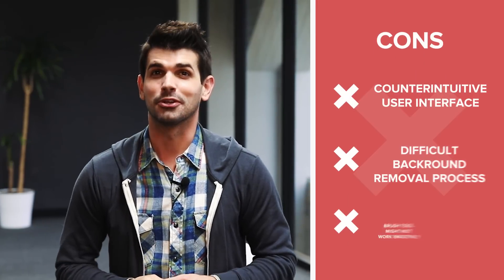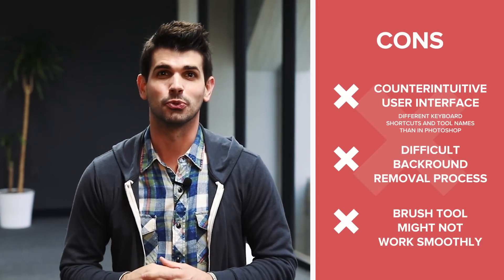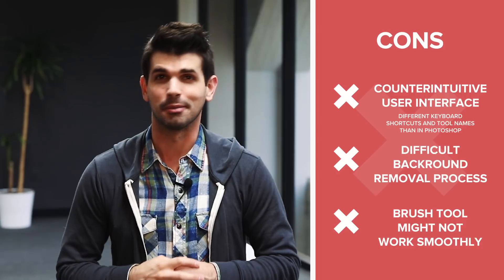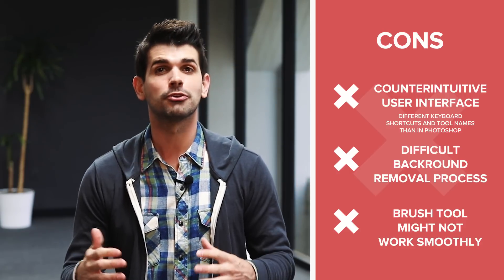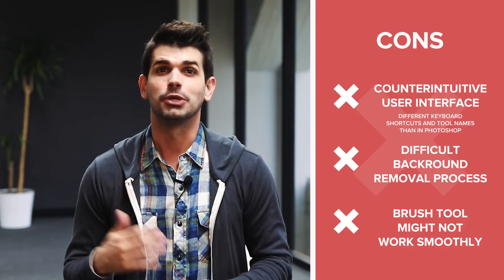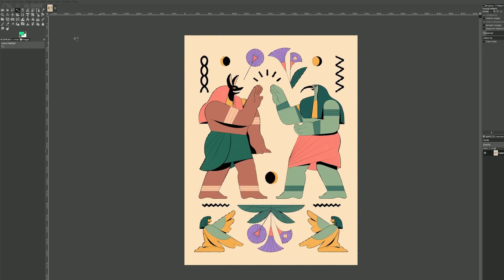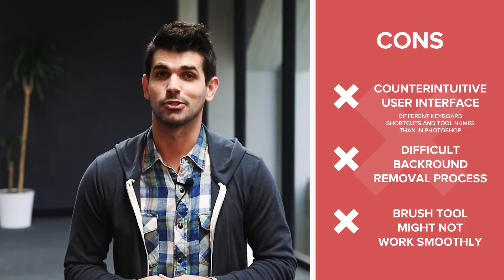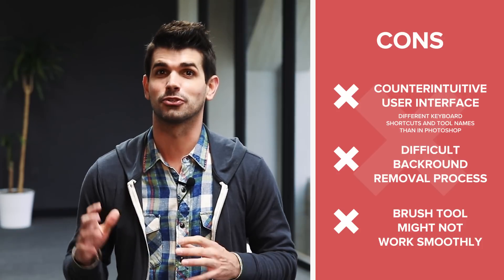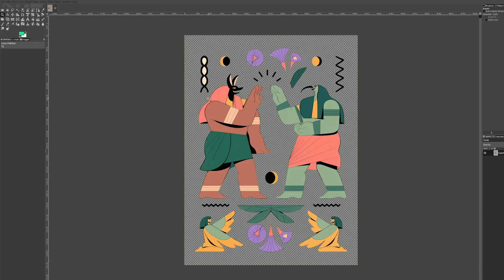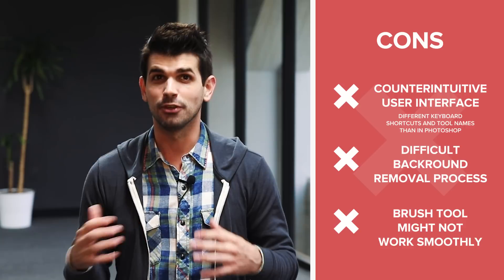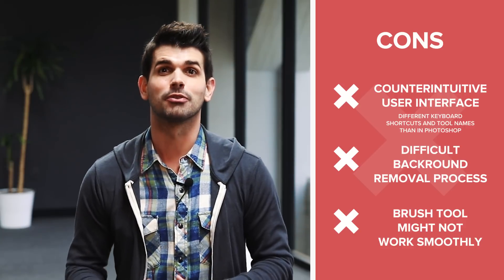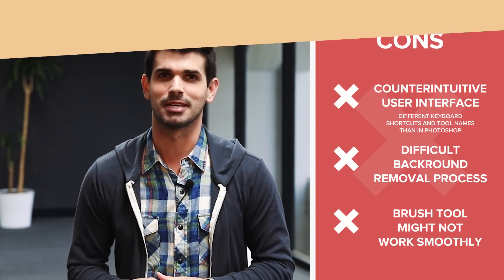At first glance, GIMP's user interface can seem a bit intimidating, with the tools, shortcuts, and workflow being completely different from the standard set by Adobe. For example, if you need to remove the background from your design, you need to highlight it with the Fuzzy Select tool, then add an alpha channel, and only then you'll be able to remove it. Also, the Fuzzy Select tool needs some extra tinkering — if you leave the default setting, this may result in an outline around your image after the background has been removed. If you prefer drawing your designs, note that the brush tool might not work smoothly sometimes.